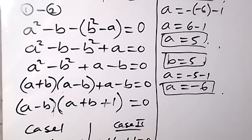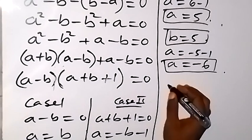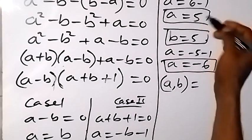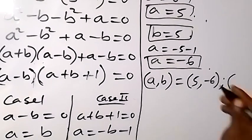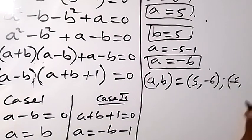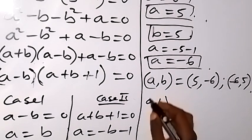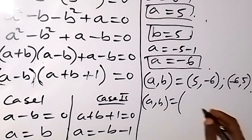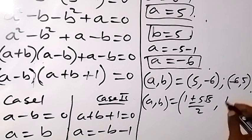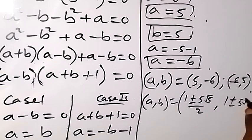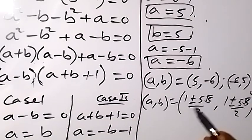Writing out all solutions: from case 2 we have (a, b) = (5, −6) and (a, b) = (−6, 5). From case 1, a and b both equal (1 ± 5√5) / 2, giving two more solutions — four solutions in total.